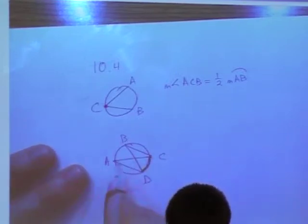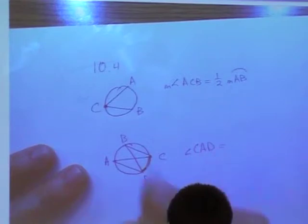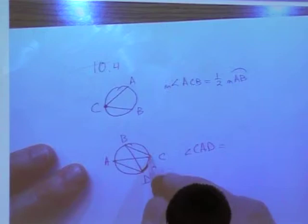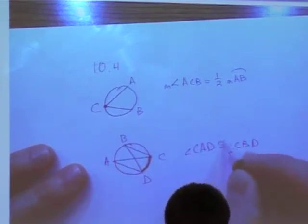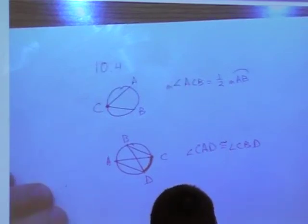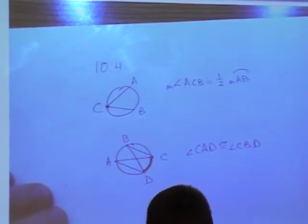I see two angles that share that same arc. I see the angle CAD. That has to be equal to the same angles that have that same arc, which would be CBD. Got it?